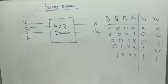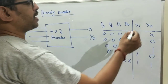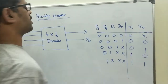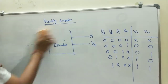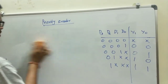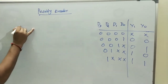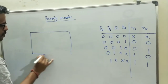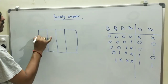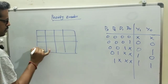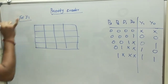This is the function table of a priority encoder. Now we need to find the simplified expression for two outputs Y1 and Y0. We are going to do it using a K-map. There are four input variables, so we are going to construct a four-variable K-map.